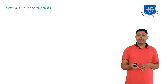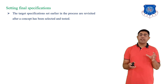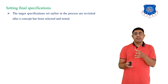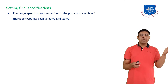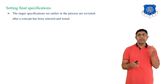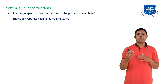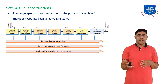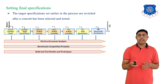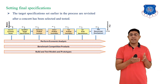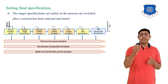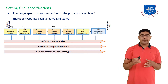Next is setting final specifications. After testing the concept, we set the final specifications. As with setting target specifications, we revise the target specifications after testing the concept and make the final specifications. In the product development process, the earlier target specifications are fixed, and after the test of product concepts, we set the final specifications.